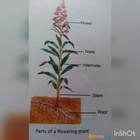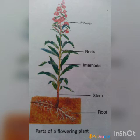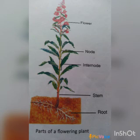Now we will discuss the functions of the stem. Number one, it keeps the plant straight and upright. Number two, it transports water and minerals absorbed by the roots to all parts of the plant. Number three, it holds the leaves in such a way that they obtain optimum sunlight for performing photosynthesis and to manufacture food. Number four, it transports food prepared by the leaves to all parts of the plant, and in some plants it stores food also. The stem of young plants, when they are green, can also perform the process of photosynthesis to manufacture food.